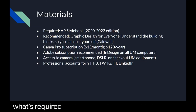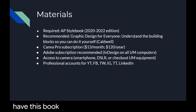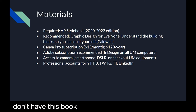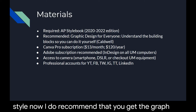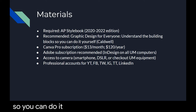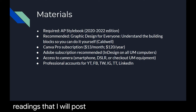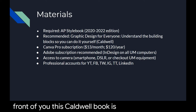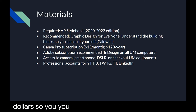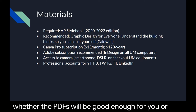In terms of what's required for this course, you do need an AP Style Book, 2020-2022 edition. You should already have this book from previous classes as it's required for most mass communication classes. Any writing you do will need to be in AP style. I recommend the book Graphic Design for Everyone: Understand the Building Blocks So You Can Do It Yourself by Caldwell. However, this is only a recommended book because there are many readings posted throughout the semester in Canvas. They are scans, and if you learn better with a real book, the Caldwell book is only about $15 — so use your own discretion.